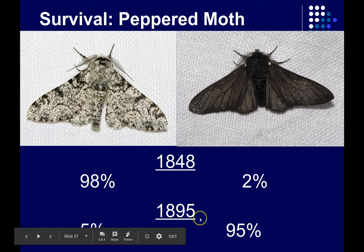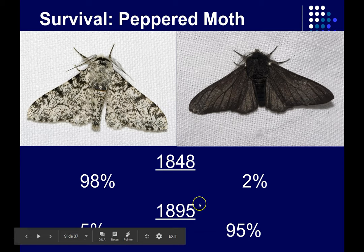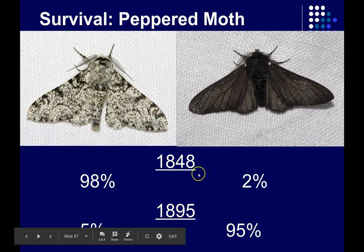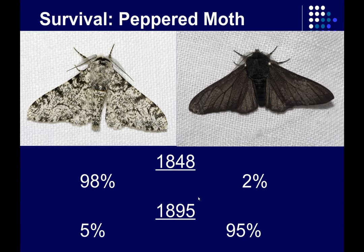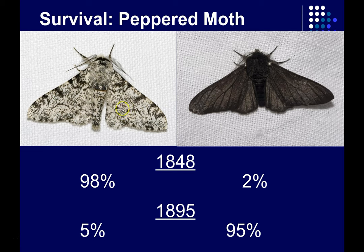By 1895, less than 50 years later, only 5% of the population had this light pigmentation pattern, and now 95% of the peppered moth population in England had the dark pattern. It was the Industrial Revolution. Between 1848 and 1895, factories were popping up all over England, spewing soot from the coal and wood they were burning. That soot settled on everything — on rocks, on the light-colored birch trees — because they didn't have scrubbers in their smokestacks. All the places where these peppered moths would have landed were now much, much darker than they had been.